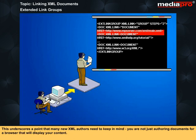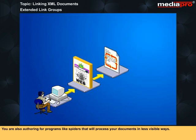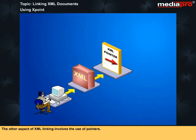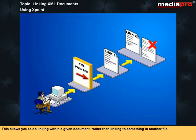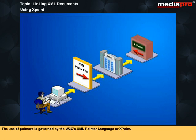This underscores a point that many new XML authors need to keep in mind: you are not just authoring documents for a browser that will display your content. You are also authoring for programs like spiders that will process your documents in less visible ways. The other aspect of XML linking involves the use of pointers. Pointers are used to reference an element or sequence of elements in a document tree. The use of pointers is governed by the W3C's XML pointer language, or XPointer.